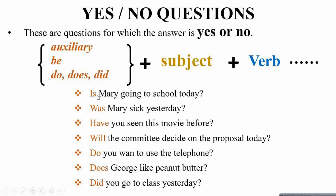Example 1: Is Mary going to school today? Here, 'is' is the auxiliary, 'Mary' is the subject, and 'going' is the verb. Since it is present, it's a present moment question. The verb 'going' is in its simple form.